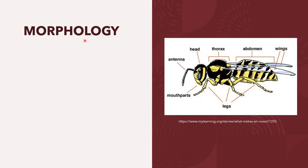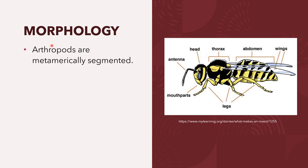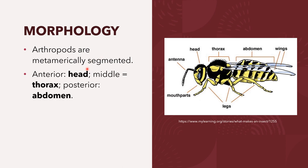For the morphology of the arthropods, arthropods are metamerically segmented. The segments of the arthropods are associated in groups. The anterior segments form the head, the middle ones form the thorax, and the posterior ones form the abdomen. The appendages on the body are paired.